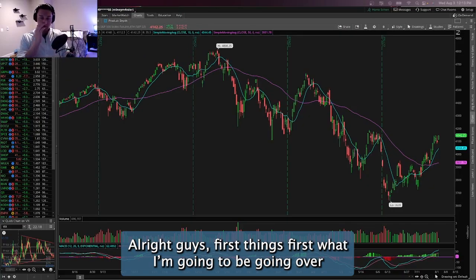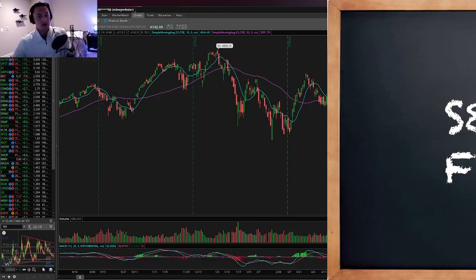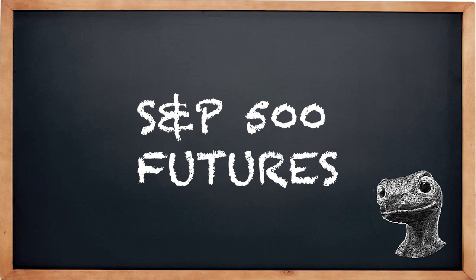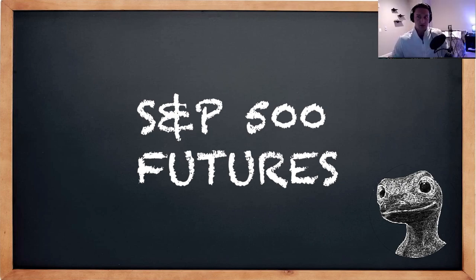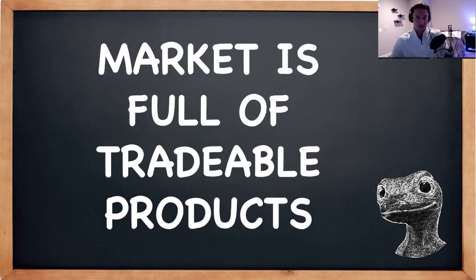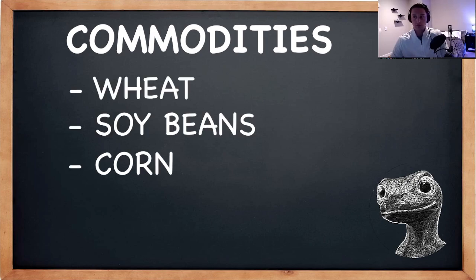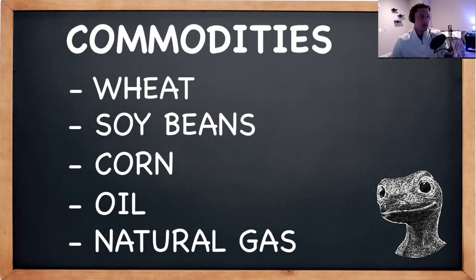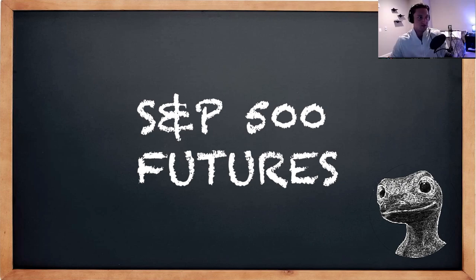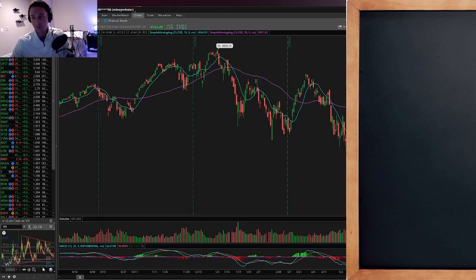Today I'm going over S&P 500 futures — this covers most of the questions I get asked about futures trading. The entire market comprises a lot of different things you can trade: commodities like wheat, soybeans, corn, oil, natural gas — all that stuff is traded via futures. Today I'm diving into S&P 500 futures, but you can take this framework and apply it to other markets as well.